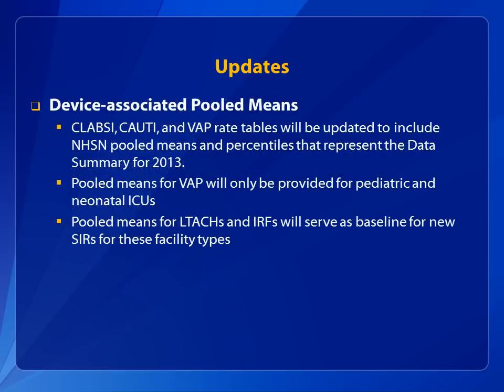A third update: CLABSI, CAUTI, and Ventilator-Associated Pneumonia, or VAP, rate tables are updated so that the NHSN pooled means and percentiles represent the data summary for 2013. The new pooled means for long-term acute care hospitals, or LTACs, and inpatient rehabilitation facilities, or IRFs, are used as the baseline data for new SIRs for these facility types. Additional details are described later in the presentation.